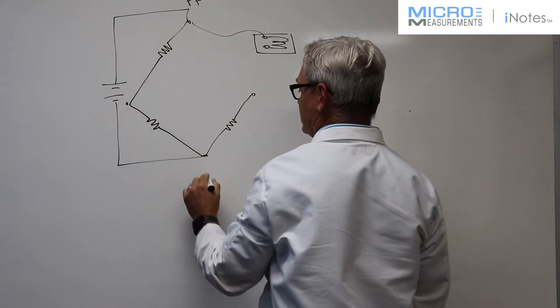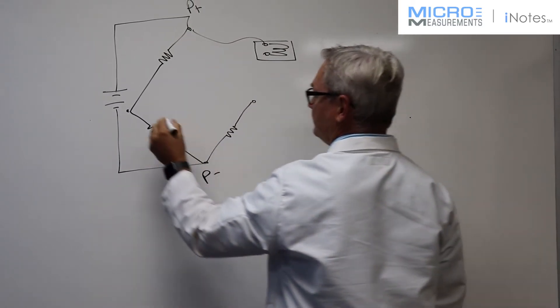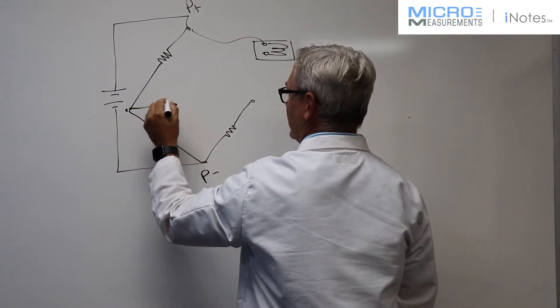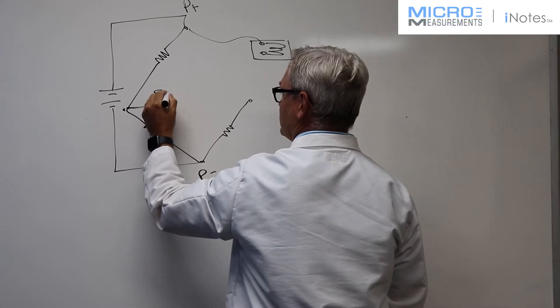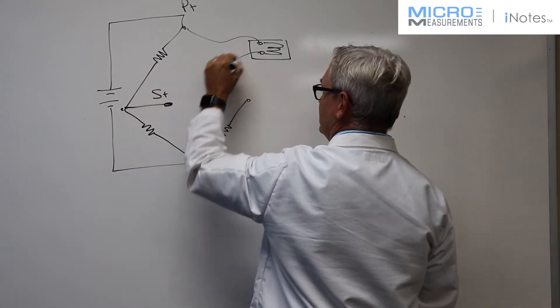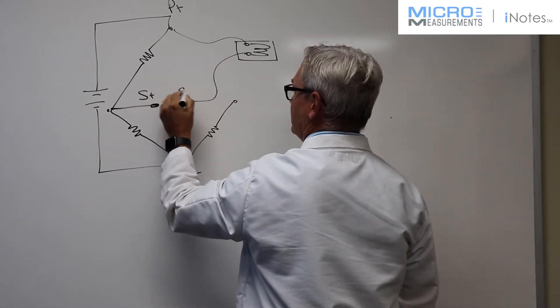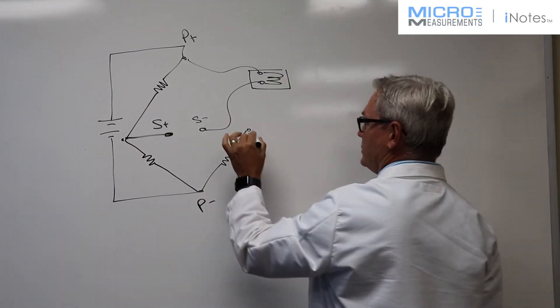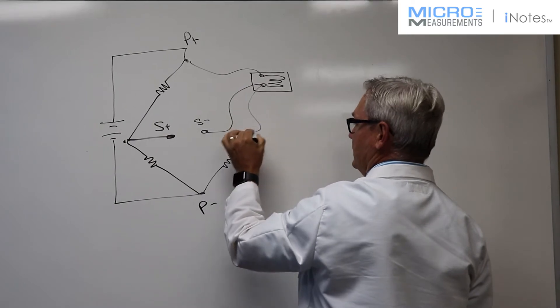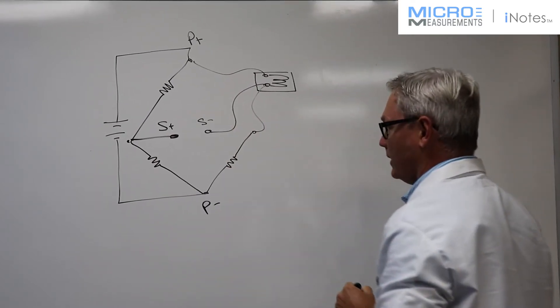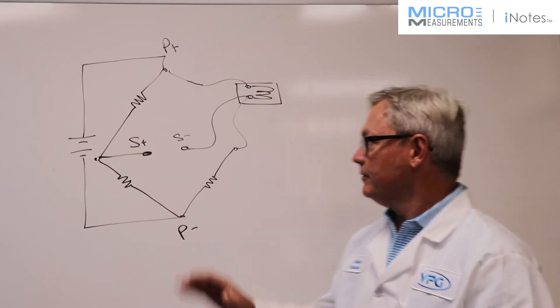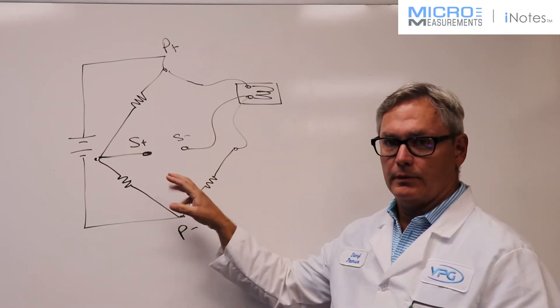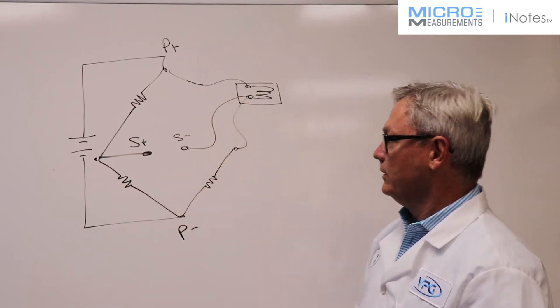And then this is going to be a three-wire quarter bridge-type circuit. So I've got the excitation that comes in. We typically label that as P-plus, P-minus, and then we've got the signal coming out. We're going to call this one S-plus, and then this one S-minus.